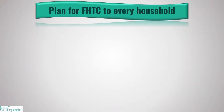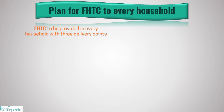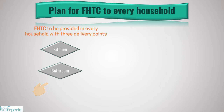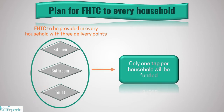A functional household tap water connection in every household will be provided with three delivery points: through the kitchen, washing and bathing area, and toilet. Out of the three, only one tap per household will be funded under Jal Jeevan Mission.